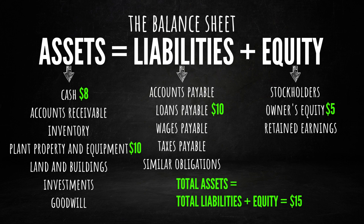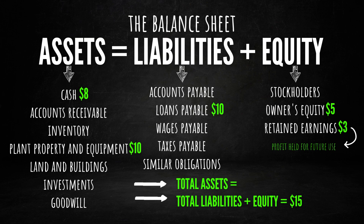Therefore, my retained earnings increase by $3, representing the profit set aside for future use. Consequently, my total assets have now grown from $15 to $18.